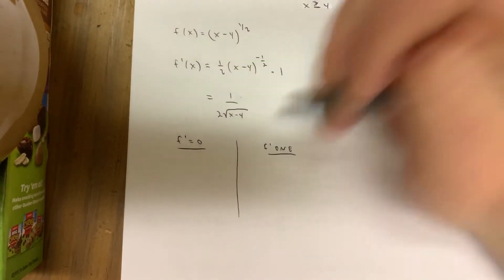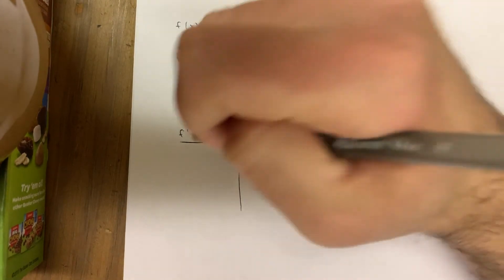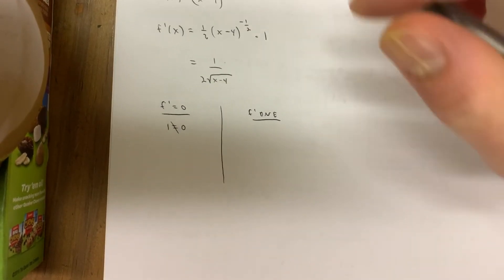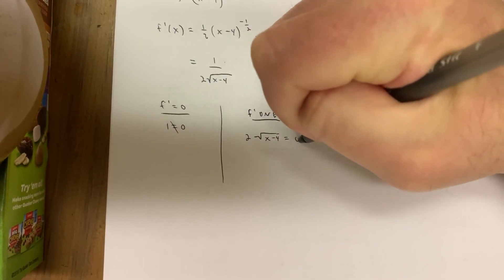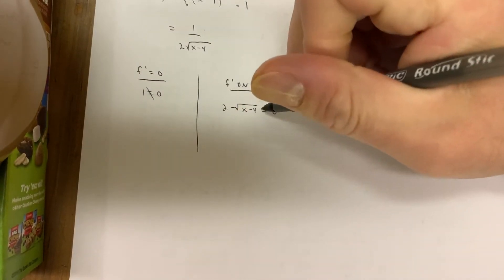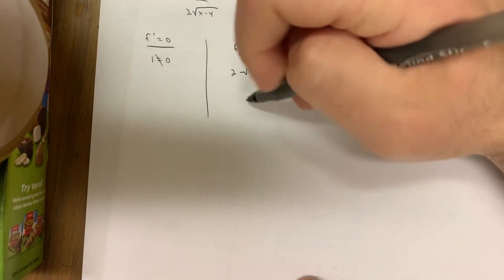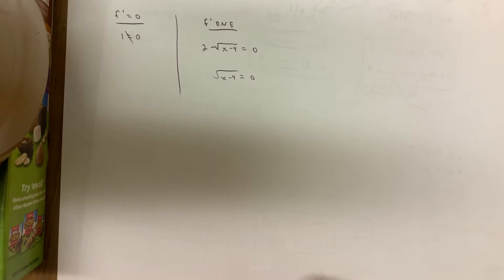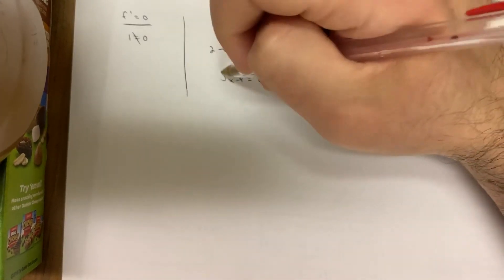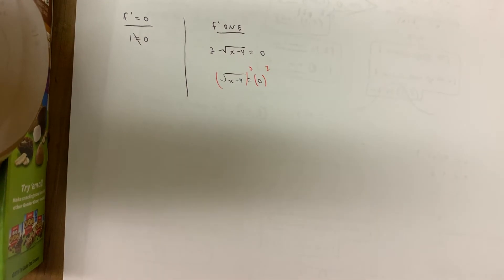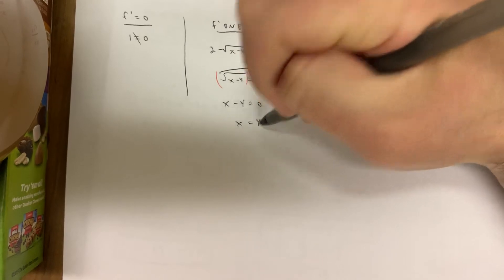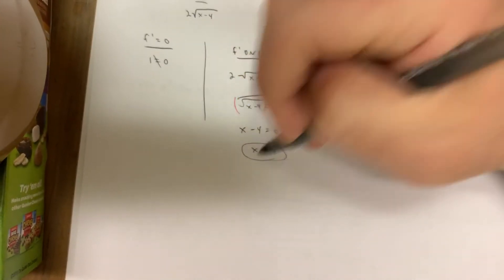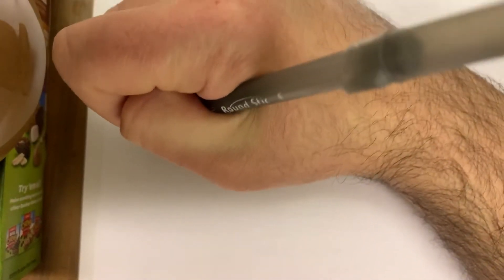A fraction is undefined when its denominator equals zero. Set 2√(x − 4) = 0: divide by 2, square both sides, get x − 4 = 0, so x = 4. That's our critical x-value. Turn it into a critical point by plugging into the original: f(4) = √(4 − 4) = √0 = 0. So the critical point is (4, 0).